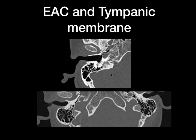Coming to the external auditory canal and tympanic membrane — you can see the bony portion and the cartilaginous portion of the external auditory canal, and the thin tympanic membrane which is intact with no perforation, no defect, and no thickening. Look for any sclerosis of the external auditory canal, exostosis arising from the external auditory canal, and congenital conditions like external auditory canal atresia.